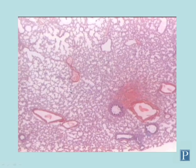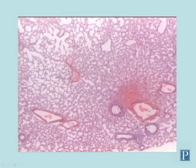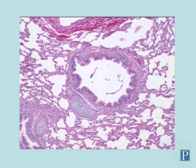This is a low magnification view of the lung. You see a lot of empty space because the lungs draw in a lot of air. You can see some blood vessels at low magnification, a bronchus, and some other larger respiratory structures. Let's take a closer look at some of these.